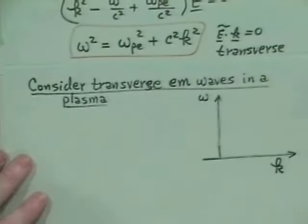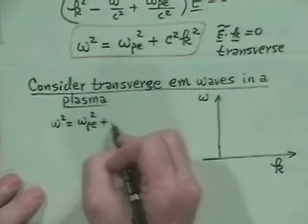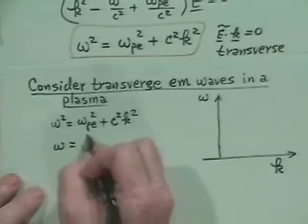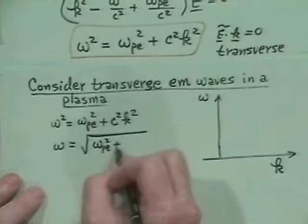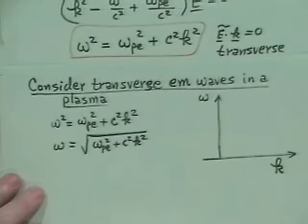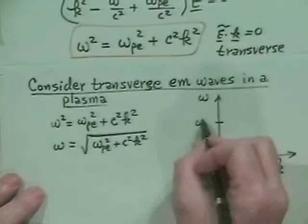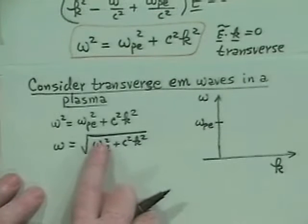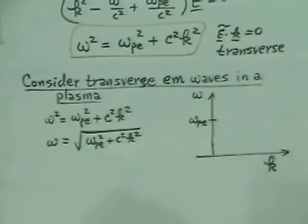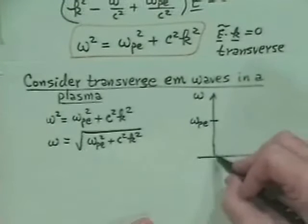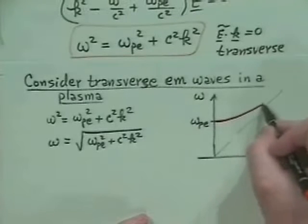A dispersion diagram is a plot of ω versus k. We have ω² = ω_pe² + c²k², or ω = √(ω_pe² + c²k²). At k → 0, this gives us ω_pe. As k gets very large, the ω_pe² term becomes negligible compared to c²k², so there's going to be some asymptote. The particular wave has a character curving up from ω_pe toward that asymptote.